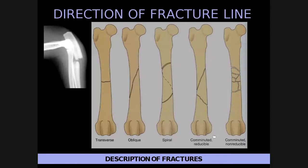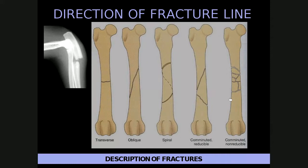Different fracture configurations include: a transverse fracture, which crosses the bone at 90 degrees to the cortex; an oblique fracture, which extends obliquely; a spiral fracture with an S-shaped or spiral configuration; and comminuted fractures with multiple fracture lines sharing the same origin. A reducible fracture means the fragments can be placed back into anatomical orientation, whereas a non-reducible fracture has too many fragments to accurately replace.